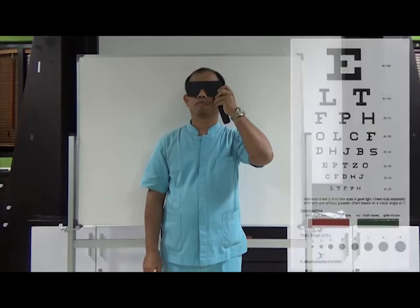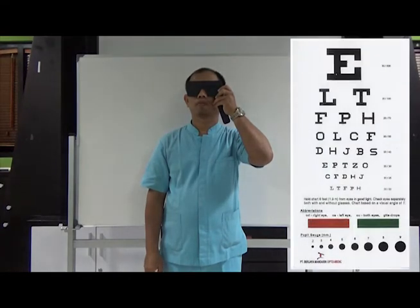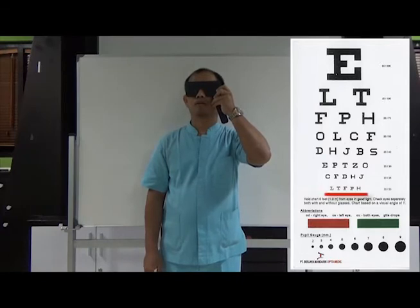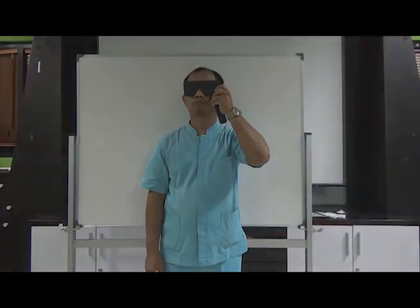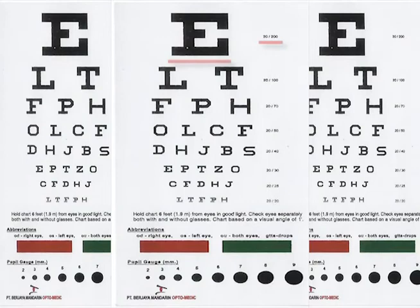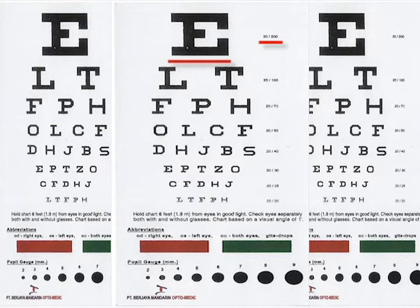Now, can you please try to read the lowest line? L, D, F, B, H. Correct. You can see that the largest letter in the chart corresponds to a visual acuity of 20/200, which means the patient can see an object at 20 feet, while others with normal visual acuity can see the same object at 200 feet.